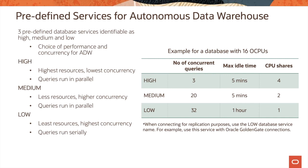When a user connects to autonomous data warehouse using the medium service, they get fewer resources compared to high, but it has higher concurrency and queries run in parallel. The low service provides the least number of resources but the highest concurrency, and queries run serially.